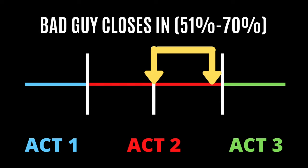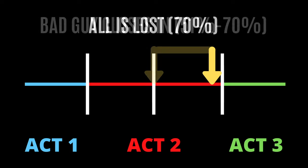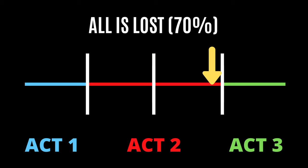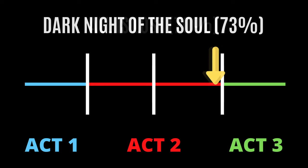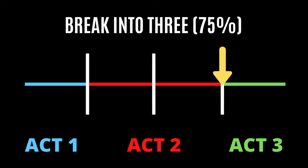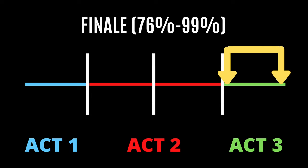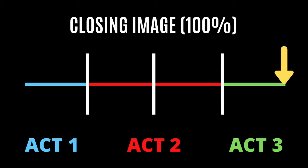Step ten is bad guy closes in, where things start getting ugly for the hero. Step eleven is all is lost, where the hero suffers a devastating defeat — often a major character is killed off. Step twelve is the dark night of the soul, where the hero reflects on everything, trying to piece together how they got to this point. Step thirteen is break into act three, where the hero gets an important piece of information to help them succeed. Step fourteen is the finale, where the hero faces off against the villain. And step fifteen is the final image, a snapshot that echoes back to the opening image.